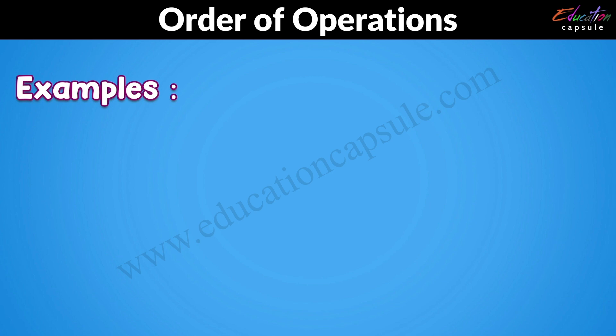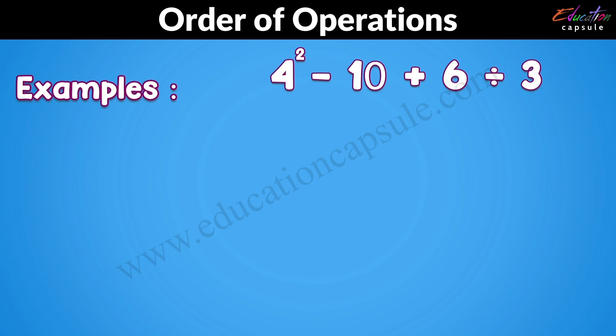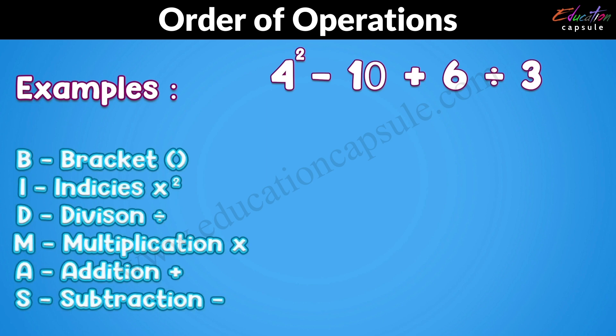Here is another example: 4 squared take away 10, add 6 divided by 3. According to BIDMAS, indices will be solved first, then we will do division, then subtraction, and lastly addition.